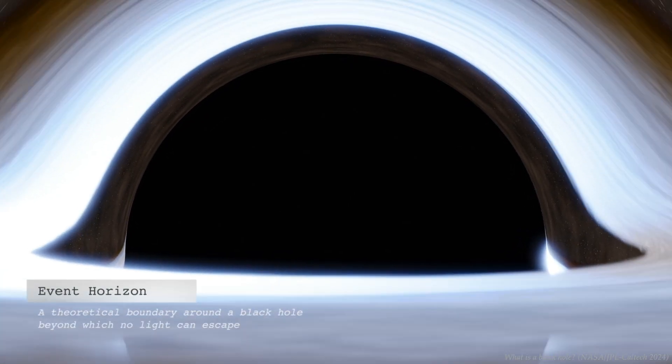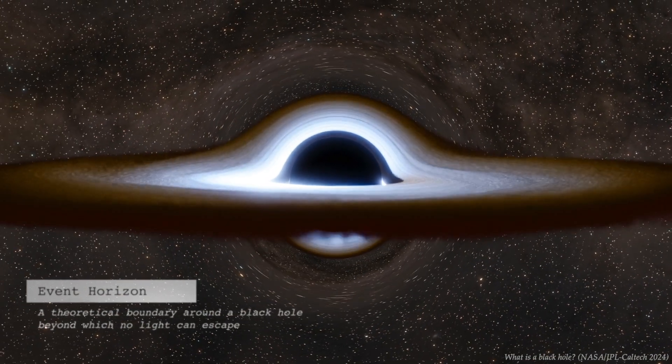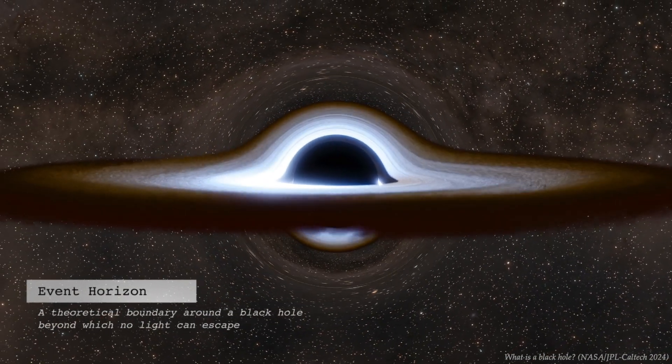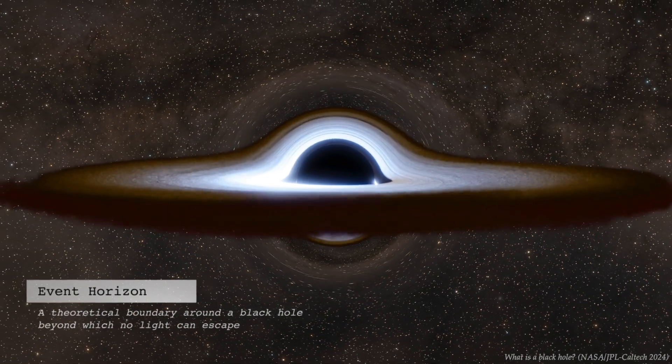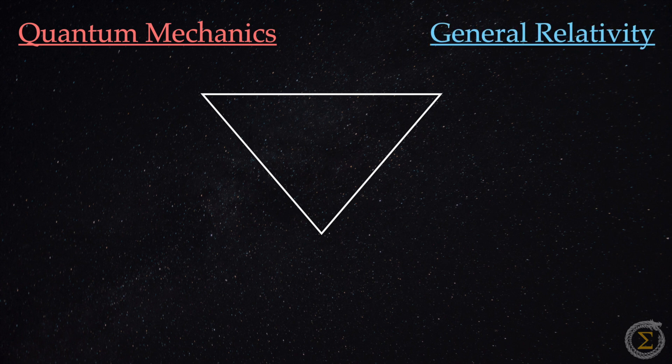Before we explain firewalls, first we must grapple with a searing contradiction while crossing the event horizon of a black hole, where gravity is so strong, not even light can escape. This is a battle between quantum mechanics and general relativity. The feud is over fundamental principles held by each.